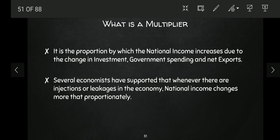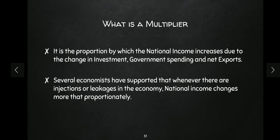Several economists have proved that if there is any injection or leakage in the economy — and as I explained in previous videos, investment, government expenditure, and exports are injections that increase the circular flow, while taxes and imports are leakages that reduce it — economists proved that if there is any injection or leakage, the change in national income is more than proportionate.